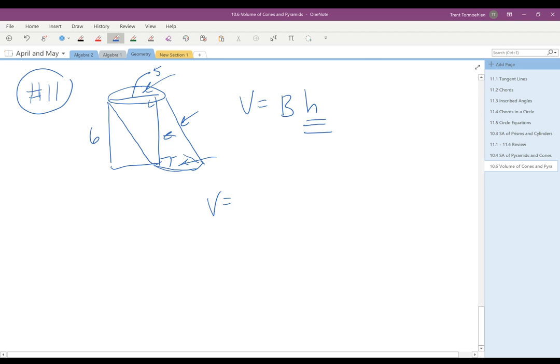And so it's just going to be, the base is pi. The radius is 5 halves, right? One half of 5 squared times the height, which is 6.